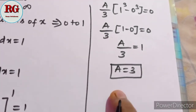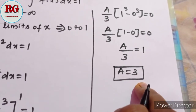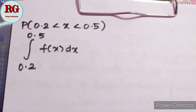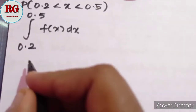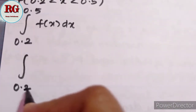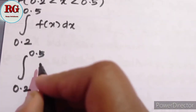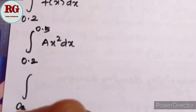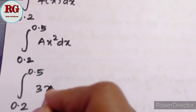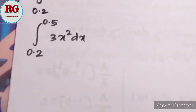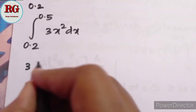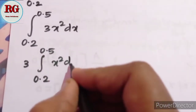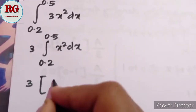Now for the first part, we put the A value in. The range is 0.2 to 0.5. So f of x with A equals 3 gives us the integral from 0.2 to 0.5 of 3x² dx.